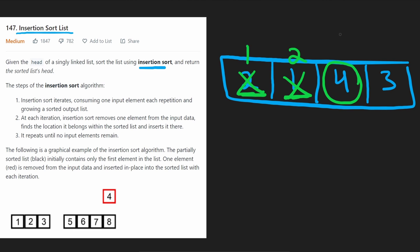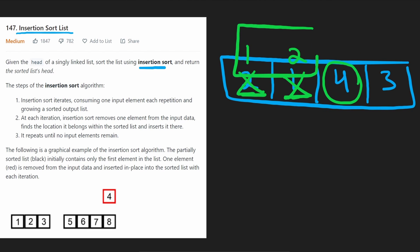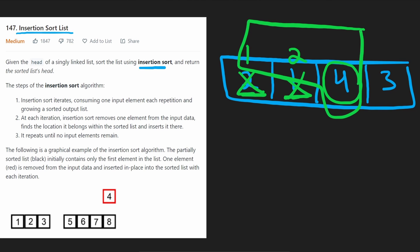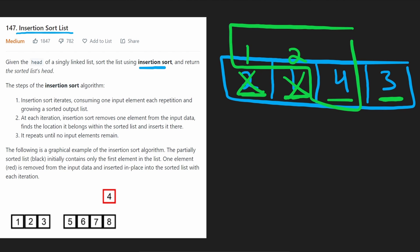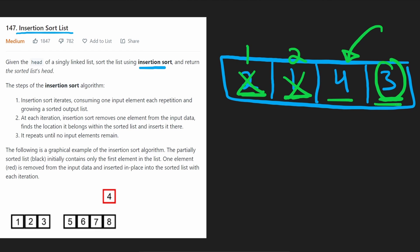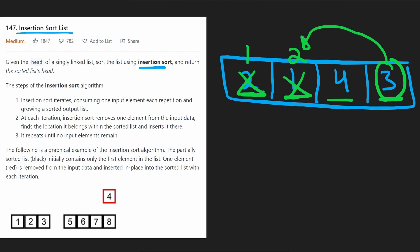Next we look at the third value, four, and determine where it should be inserted. Well, these three are already in sorted order because four is greater than two, so we don't have to do anything. Then we look at the last value, three. We know the first three are in sorted order, but three is smaller than four, so it can be swapped with four. There could be another value over here, so we keep iterating through the array. Three is greater than two, so it goes in between two and four.